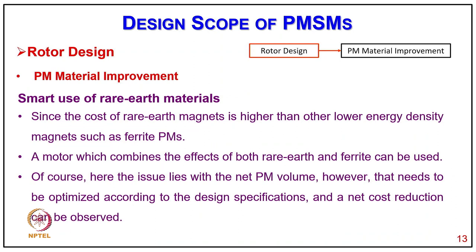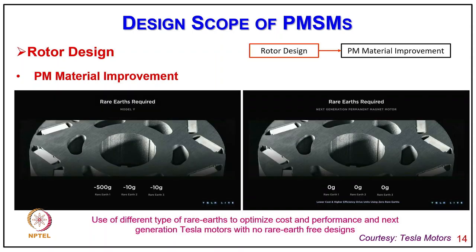Coming to smart use of rare earth magnets: since the cost of rare earth magnets is higher than lower energy density magnets such as ferrite, a motor combining the effect of both rare earth and ferrite magnets can be used. The net rare earth magnet volume needs to be optimized according to design specifications, and a net cost reduction can be observed. This approach is used to optimize cost and performance for next-generation motors, typically for applications like Tesla motors with reduced rare earth magnet design, showing how magnets are placed in the flux barrier.